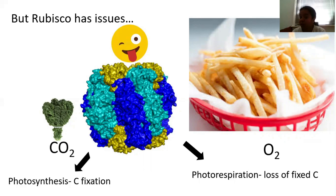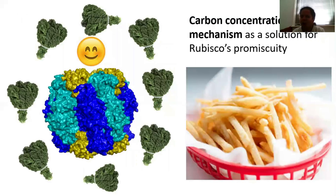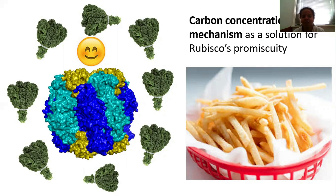It must be noted that the availability of carbon dioxide is lesser for aquatic microbes, which makes their feat of contributing to the annual net productivity even more remarkable. So how do organisms cope with this issue? A lot of aquatic microbes have developed a mechanism called carbon concentration mechanism as a solution to Rubisco's promiscuity. They manage to increase the local concentration of carbon dioxide around Rubisco, thereby shielding Rubisco from seeing too much oxygen, and thereby Rubisco is happy carrying out its usual reaction of catalyzing carbon dioxide fixation.